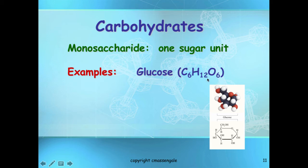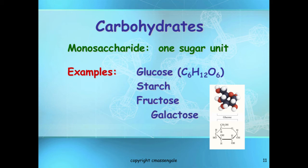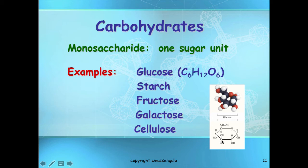Starch, fructose, galactose, and cellulose are also examples of carbohydrates. Cellulose is found mainly in plants, while glucose is found in both plants and animals. Here is a 3D model of what a simple monosaccharide can look like, and here it's written with a chemical formula creating a ring structure. Notice it is the carbons linked together with one oxygen and a double bond in the middle, and everything else branches off. Chitin — found in exoskeletons of shrimp, ants, and insects — is another example. Glucose is our main monosaccharide.